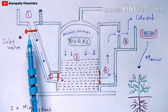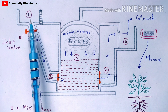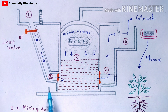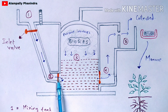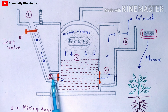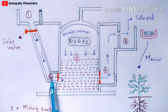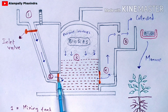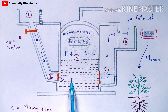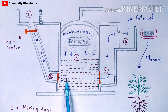Then slowly open the inlet valve so that the mixture from the mixing tank starts moving towards the inlet chamber. The inlet chamber valve — shown in orange — is also opened, allowing the slurry to move from the mixing tank into the inlet chamber, and then into the digester tank. The inlet chamber valve acts as a mediator between the inlet chamber and the digester tank.